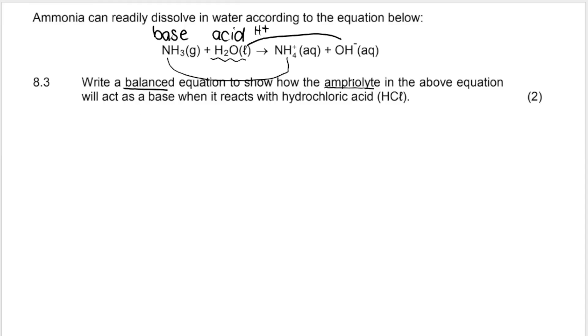They say, show how the ampholyte will act as a base when it reacts with HCl. So if we take HCl and we react it with water, which as we know is a good ampholyte, then this will then be the base. This will then be the acid, hydrochloric acid. It's a strong acid. And how will the rest of the equation look? Well, remember, acids are proton donors. So it's going to give away an H plus to my base.